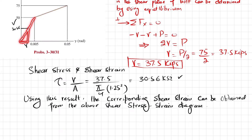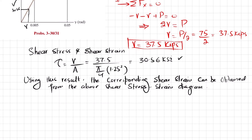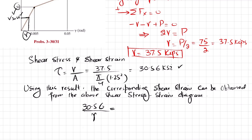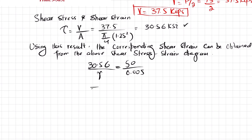Since the slope is constant, any ratio of vertical to horizontal will be the same. So: 30.56 divided by its gamma equals 50 divided by 0.005. At this point on the graph, the vertical component is the shear stress of 30.56 ksi, and the corresponding shear strain is gamma. The ratio 30.56/γ = 50/0.005 gives us the shear strain.